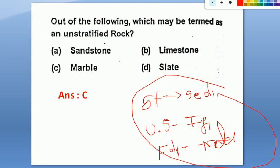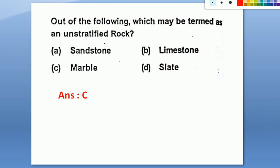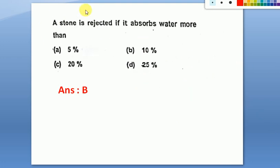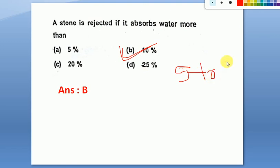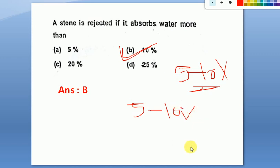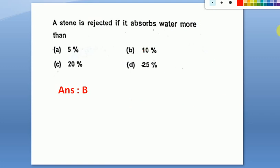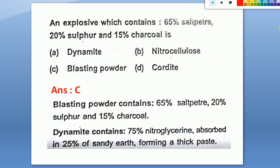A stone is rejected if it absorbs more than 10 percent water. The acceptable range for water absorption is 5 to 10 percent.